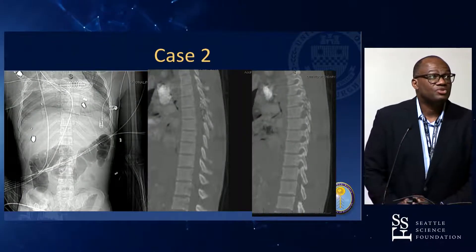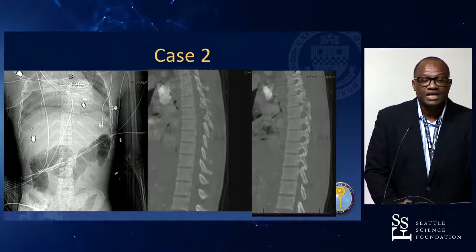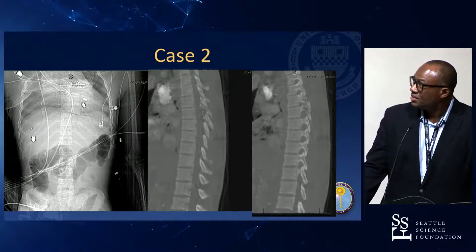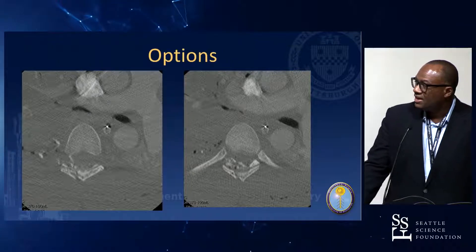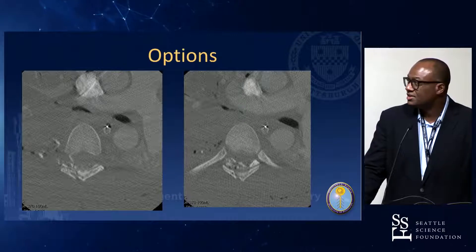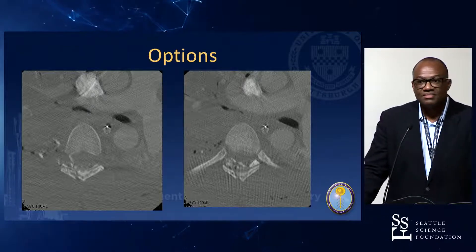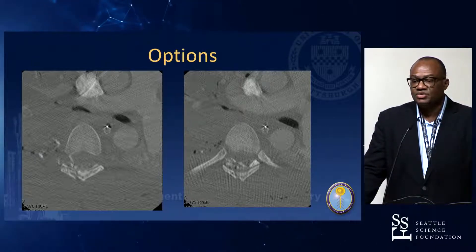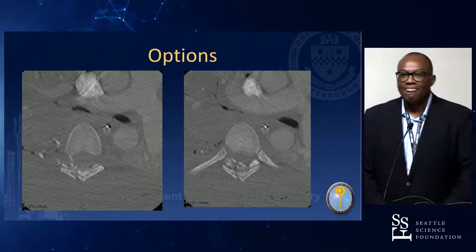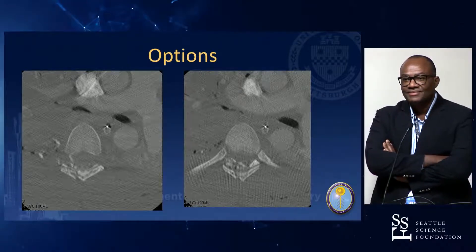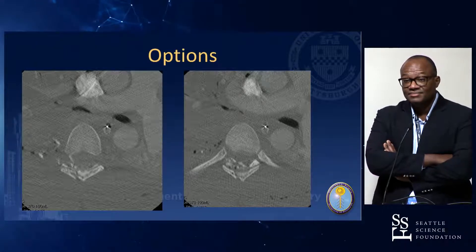A more unusual recent case: 22-year-old with multiple gunshot wounds, no anterior column injury — all posterior and middle column. There's a pedicle fracture where the bullet trajectory went. He has a complete injury. What are his options? Should we brace him? The discussion suggests: mobilize, deal with chest tubes, and mobilize. Some question whether to stabilize him given the complete injury and his young age.